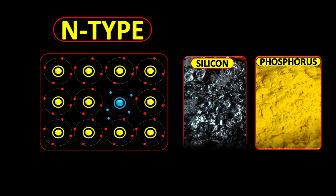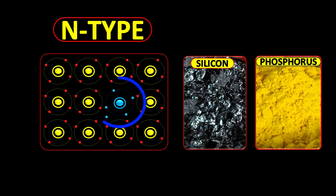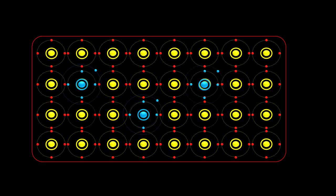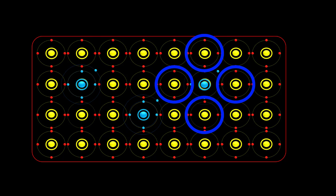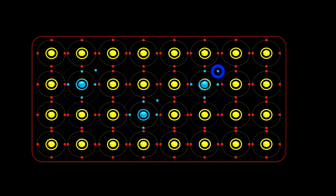Phosphorus belongs to group 5 of the periodic table, therefore it has five electrons in its outermost shell. Out of five electrons, four are consumed in covalent bonds with neighboring silicon atoms.